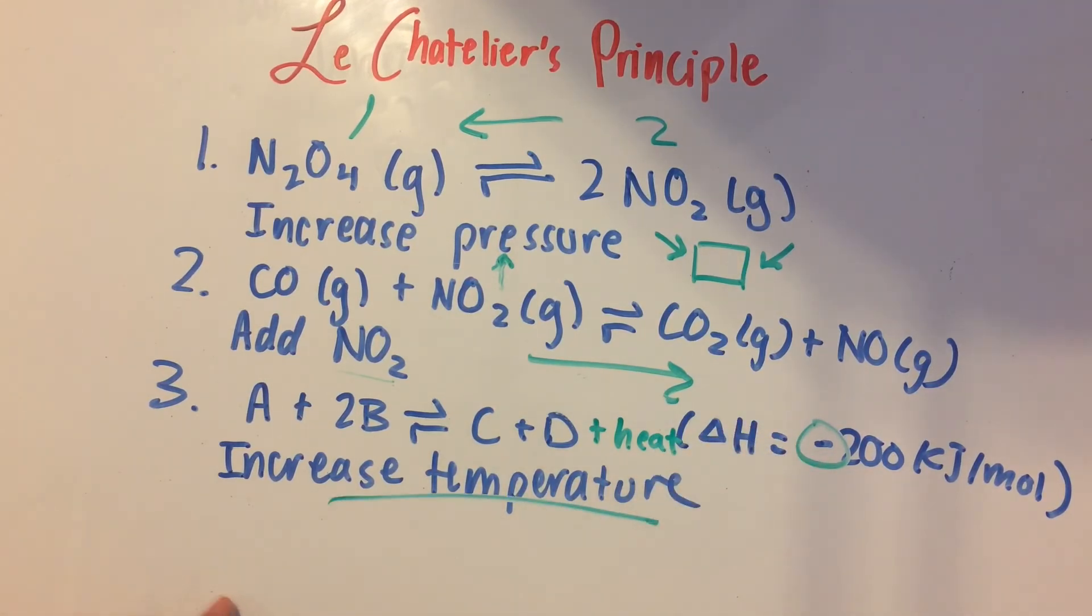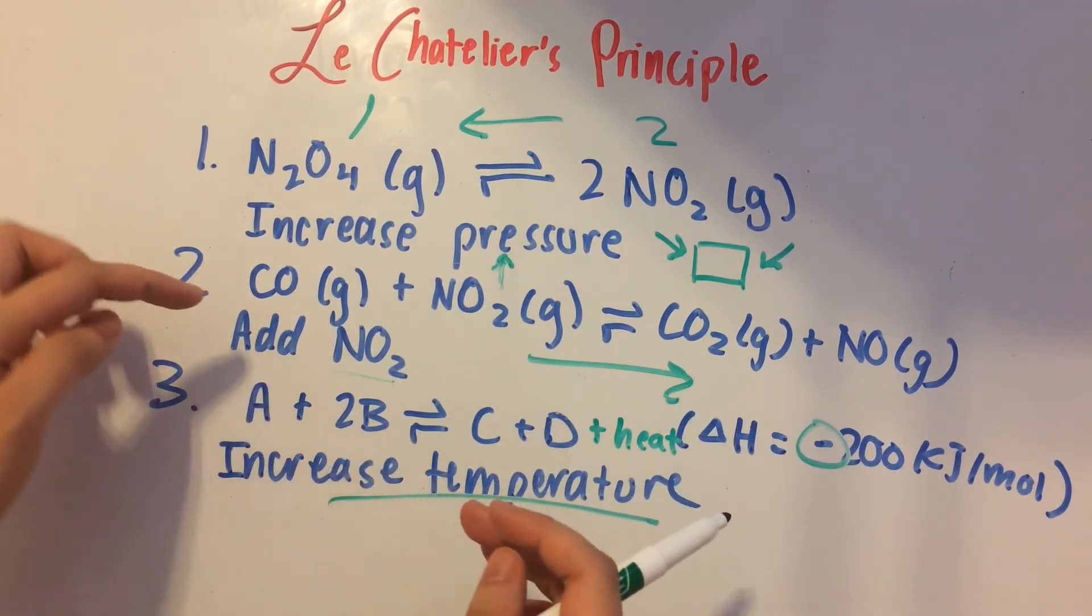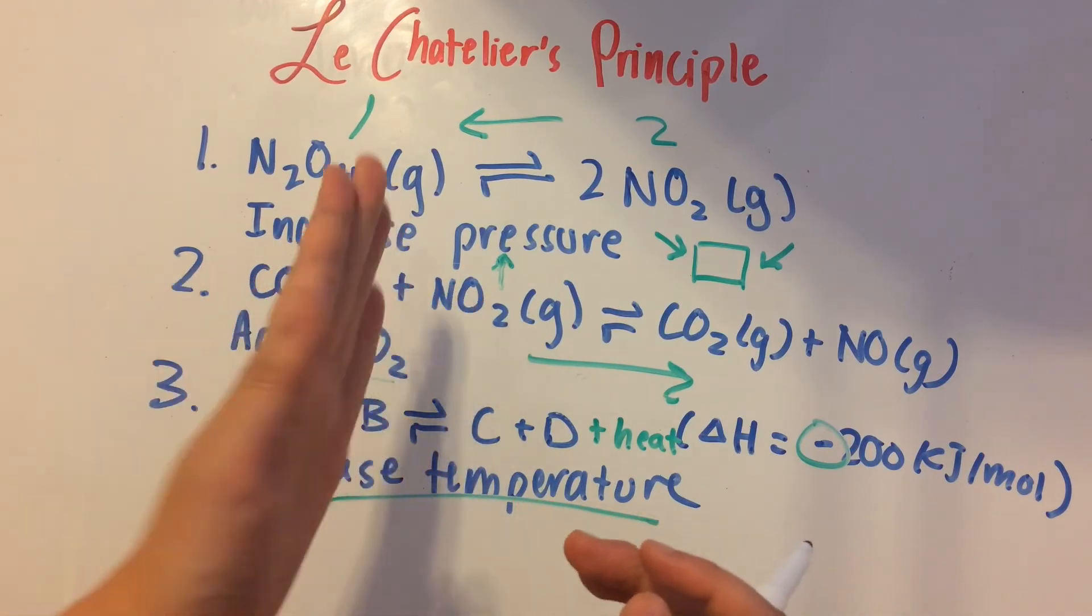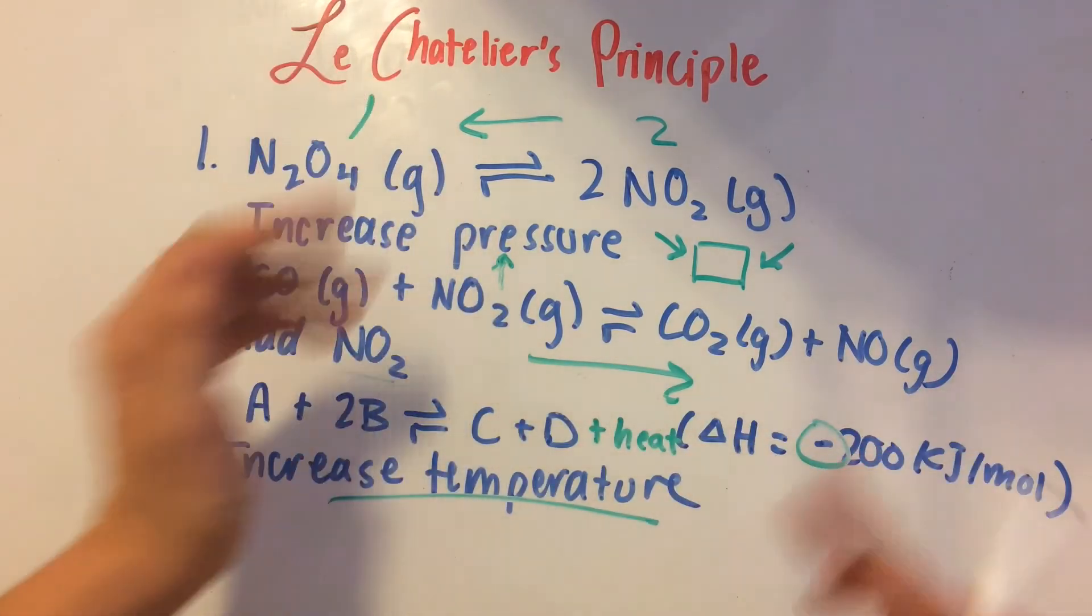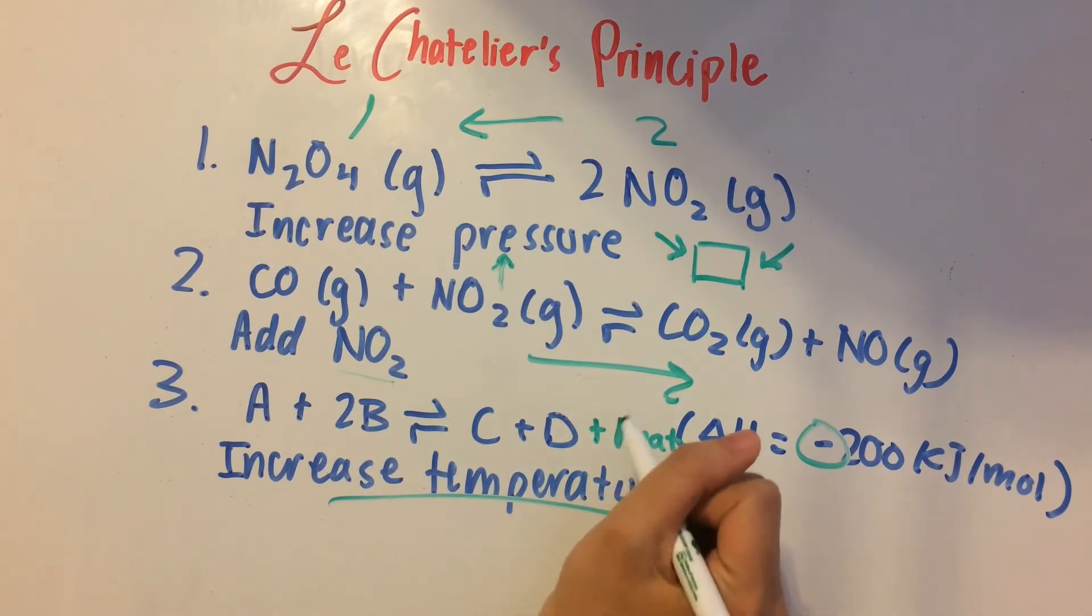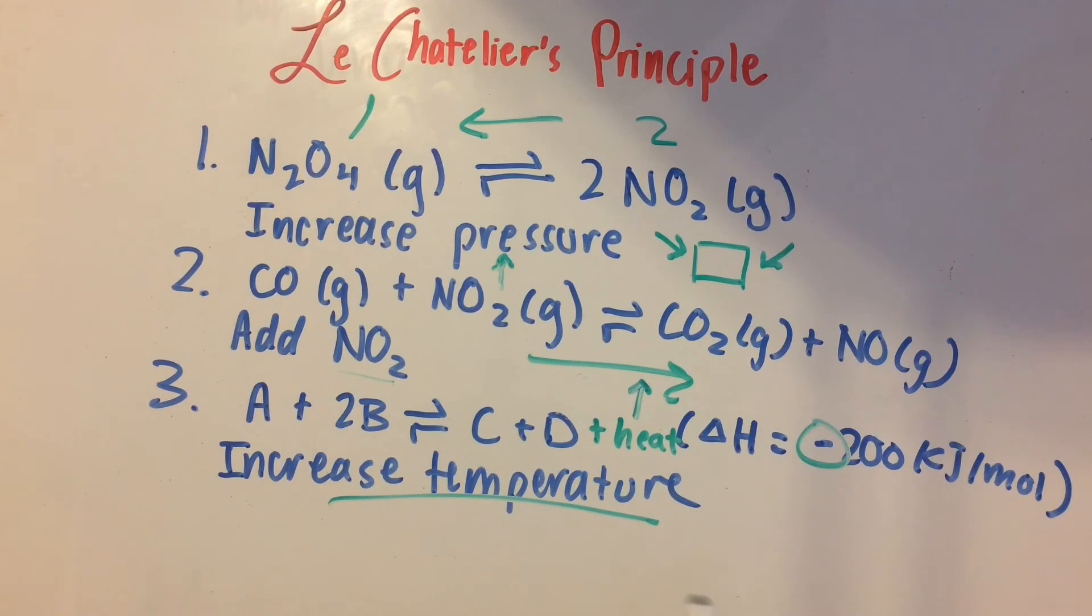So when we increase the temperature, think of it like how we did this last one. When we added NO2 on the left side of the equation, it shifted to the right. So when we increase the temperature, we'll think of heat as part of this equation.